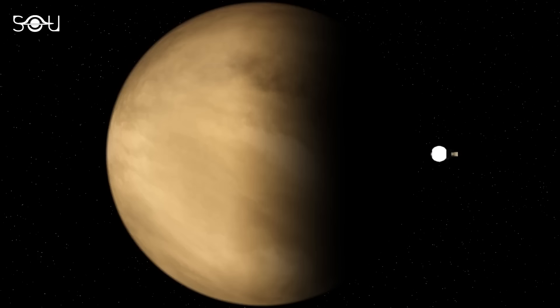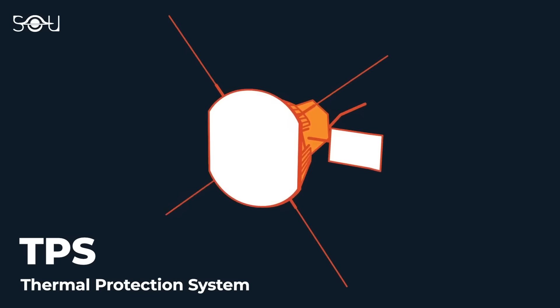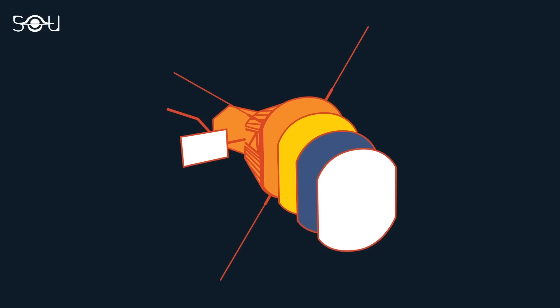The answer is in its Thermal Protection System, or TPS. It comprises a shield made of carbon composite foam sandwiched between two carbon plates. This shield is 2.4 meters in diameter and 4.5 inches, or 0.11 meters thick.